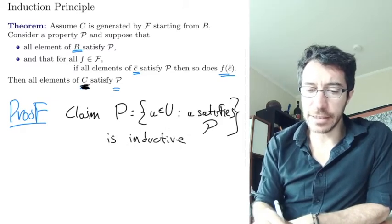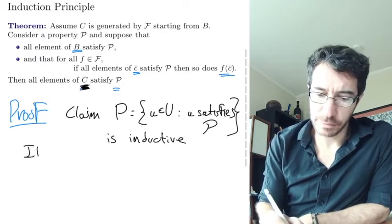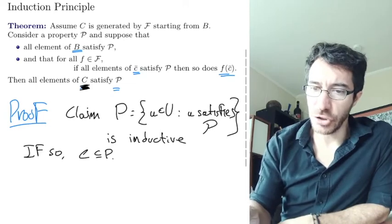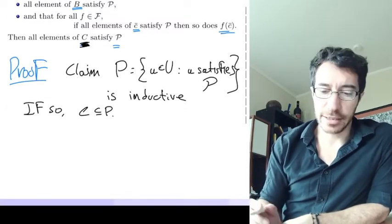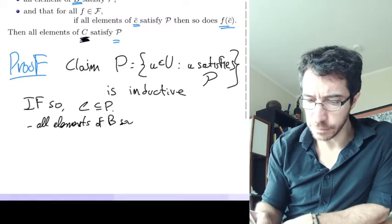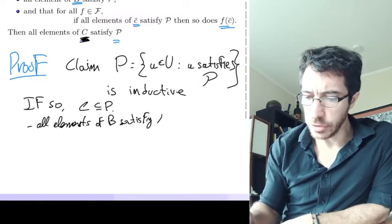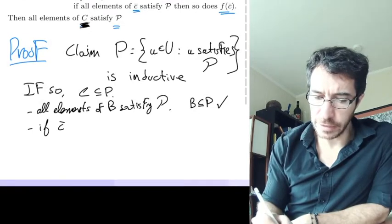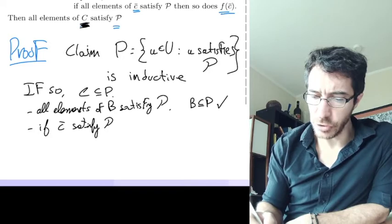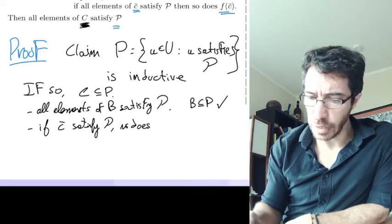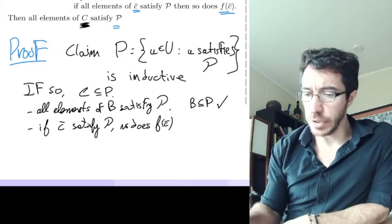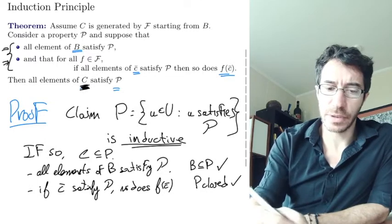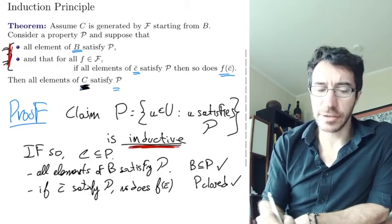If P is inductive, then C must be included in P, and we will have that everybody in C satisfies the property P. Why is that set inductive? Well, all elements of B satisfy the property, so B is included in P — that's the first part of being inductive. And if c satisfies P, so does f(c) for all the functions in our family, so P is closed. These two facts say P is inductive, and if it's inductive, then C has to be a subset of it. Very simple.